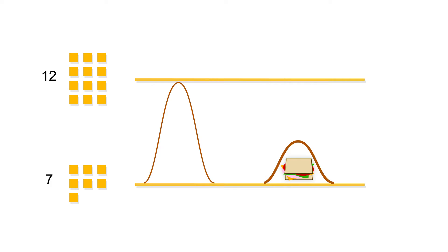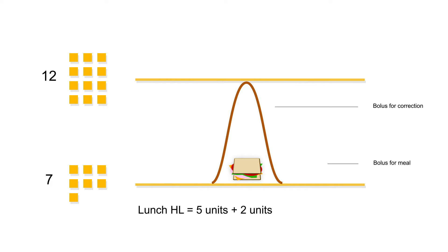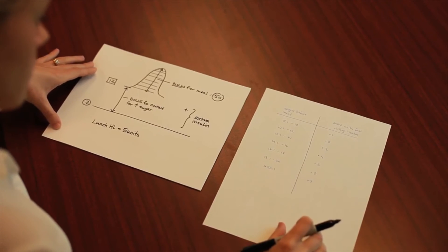Some people will have what's called a correction scale. We give you a bolus to correct for the high sugar, and then we also give you a bolus for your meal — both using the exact same type of insulin. For example, if you're using Humalog, you will take a certain amount of units of Humalog for the food plus extra units of Humalog for the correction. Let's say your lunch Humalog dose is five units — you will take five units for the food plus extra insulin to bring the blood sugar down. People will generally follow a correction scale to determine how much extra insulin to take when the sugar is high.